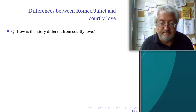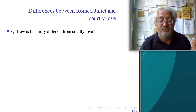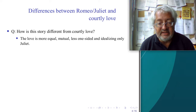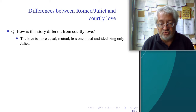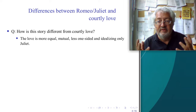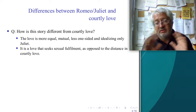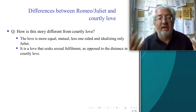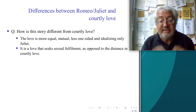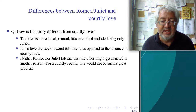How is this story different from courtly love? First, the love is more equal and mutual — less one-sided and idealizing of only one person. Both Romeo and Juliet are in love in a symmetrical way. It is also a love that seeks sexual fulfillment, as opposed to the distance in courtly love, where the point is to idolize someone from a distance without actually engaging with them. Here, both want to meet and be together.